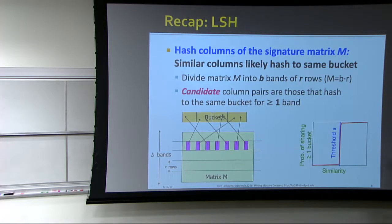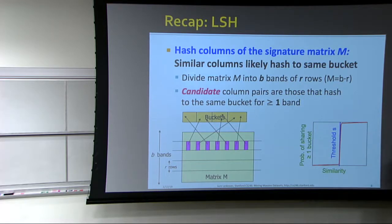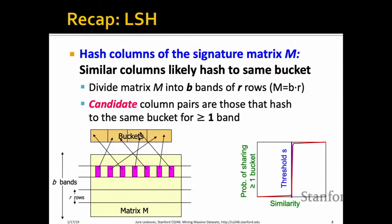Ideally, we'd love to see an S-curve behavior. On the x-axis is the actual similarity between two documents; on the y-axis is the probability of sharing at least one bucket. Say we want all documents with more than 0.6 similarity to be retrieved and placed in the same buckets, while anything below that threshold should not be considered. The whole goal of today's lecture is to turn this plot from a line into an S-curve as close as possible to our threshold line.